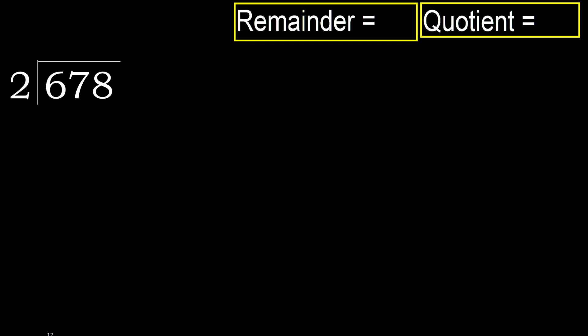678 divided by 2. 6 is not less — therefore with 6, 2 multiplied by which number is nearest to 6 but not greater? 2 multiplied by 4 is 8, and 8 is greater.